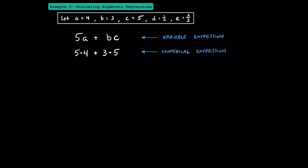Now we have a numerical expression we can solve. Following the order of operations, let's start with 5 times 4, which is 20, giving us 20 plus 3 times 5. Multiplication comes first, so 3 times 5 is 15, giving us 20 plus 15. Adding those together, our final answer is 35. Since we were given the values of A, B, and C, we were able to evaluate this algebraic expression.